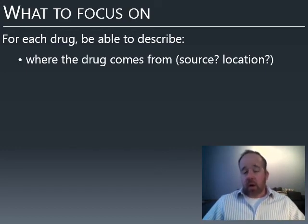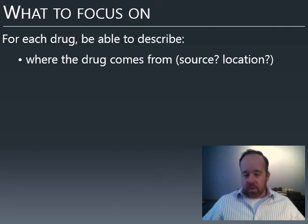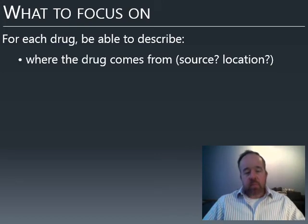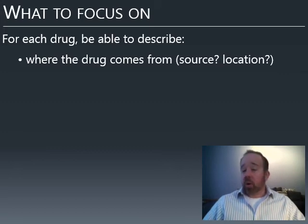For naturally occurring products like tobacco, marijuana, and some hallucinogens, there's a geographic location they originated from. Alcohol is different — multiple cultures independently created alcoholic beverages, so you can't answer that question the same way. Some drugs are also synthetic. You don't need to know what country a drug was first synthesized in, but if it's a natural product, where it comes from says something about its history.